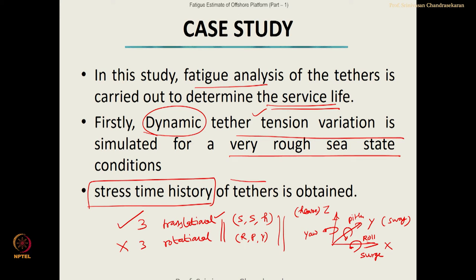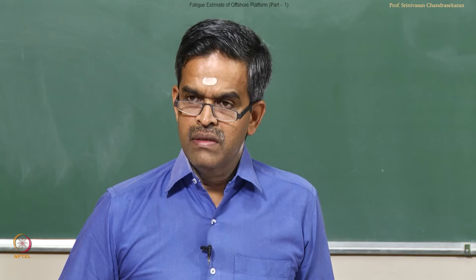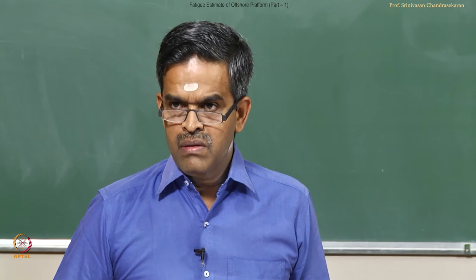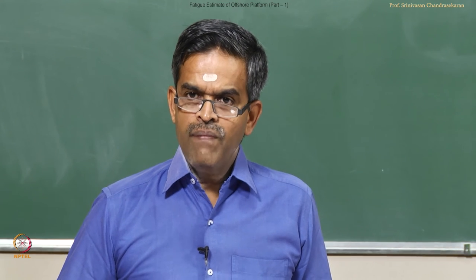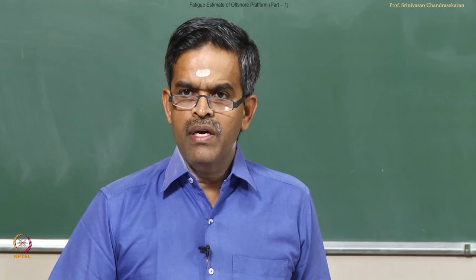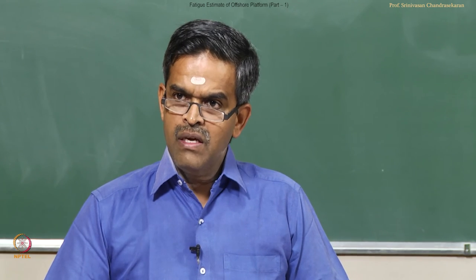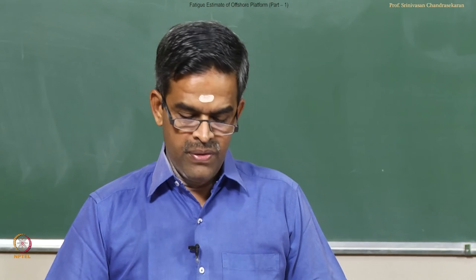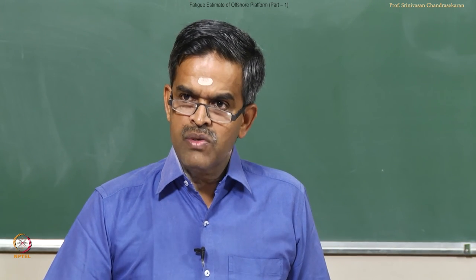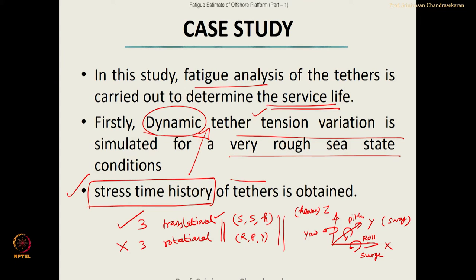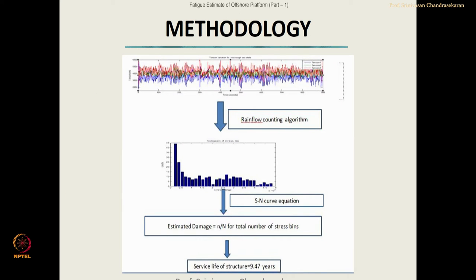Fatigue analysis can be conducted by two ways. One: if we get a stress time history, apply the rain flow counting method to get the stress histogram, then use Miner's rule to find the cumulative damage and estimate the service life. The other method is where the stress histogram is directly obtained and given. In the present study, the stress histogram is not given directly; instead, the stress time history is obtained from the study and stress bins are calculated from it directly.